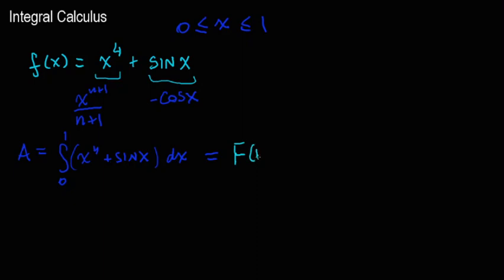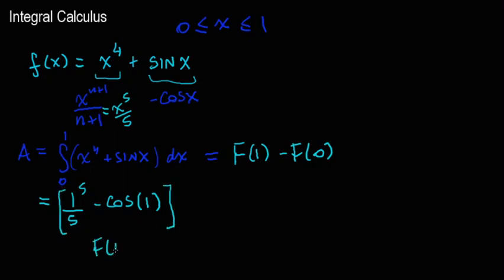This would be the antiderivative at 1 minus the antiderivative at 0. So x to the power of 5 over 5, this is 1 to the power of 5 over 5 minus cosine of 1. This is F(1), we still have to do F(0). So F(0), if x is 0 here, that's 0 to the power of 5 over 5 that's 0 minus cosine of 0.